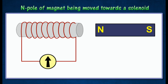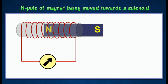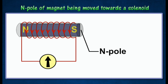The diagram shows the north pole of a bar magnet approaching a solenoid. According to Lenz's law, the current generated in the coil must cause an effect which opposes the approaching magnetic field. This is achieved if the direction of the induced current creates a north pole at the end of the solenoid closest to the approaching magnet, as the induced north pole tends to repel the approaching north pole.